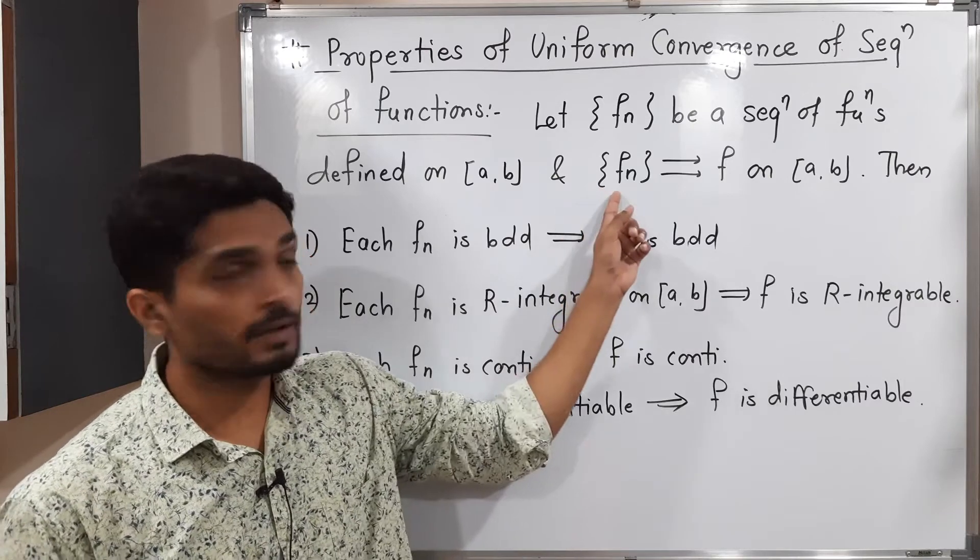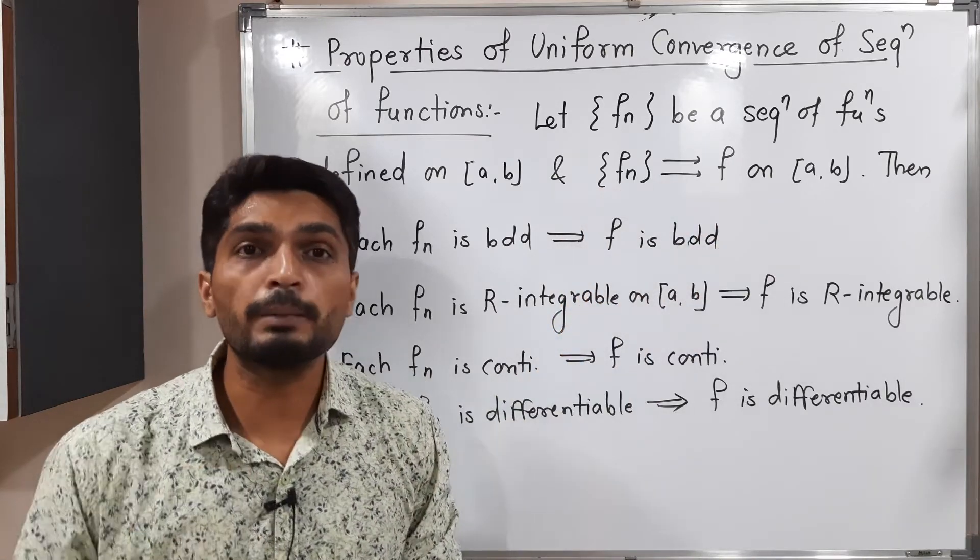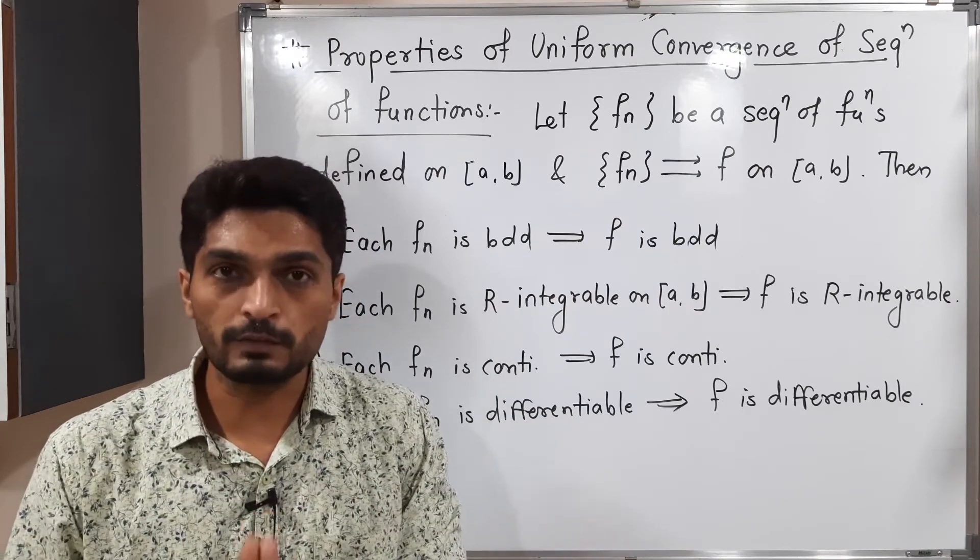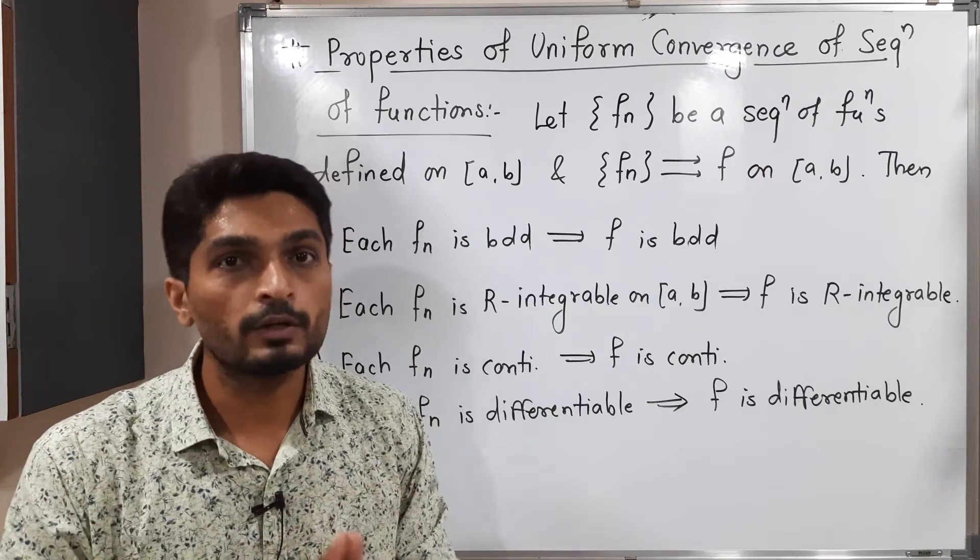We have the sequence {fn} which converges uniformly to F. This is very important information. We have uniform convergence of a sequence of functions, and that sequence converges to F uniformly.